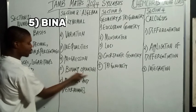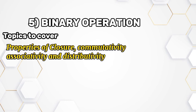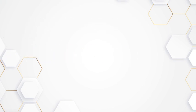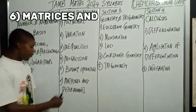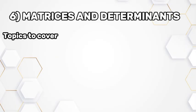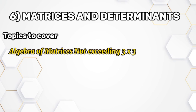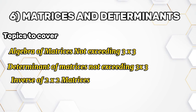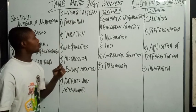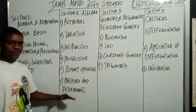Number five is binary operations. The topics are: properties of closure, commutativity, associativity, and distributivity. The last one is matrices and determinants. The topics are: algebra of matrices not exceeding three by three, determinants of matrices not exceeding three by three, and inverse of two by two matrices. That covers session two — algebra.